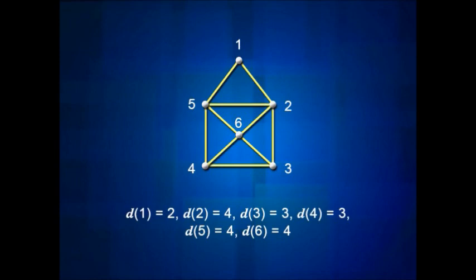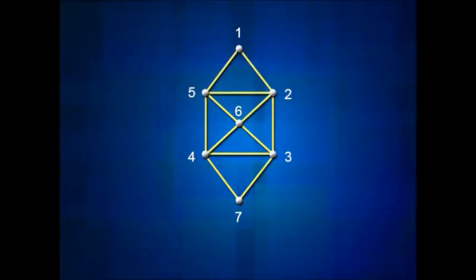Can that graph be drawn beginning and ending at the same vertex? No — beginning and ending at the same vertex would require every vertex to have even degree. If you want to draw your graph as a closed trail, every vertex has to have even degree. If we modify the graph by inserting a new vertex 7 and connecting vertices 3 and 4, then every vertex now has even degree, including 3, 4, and the new vertex 7.